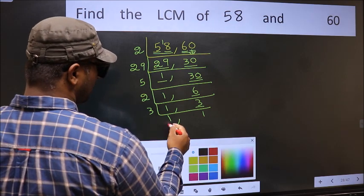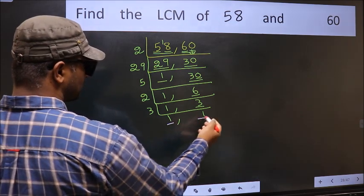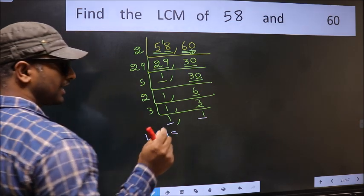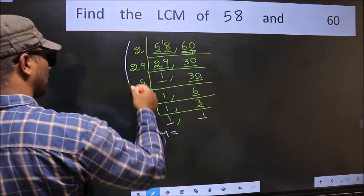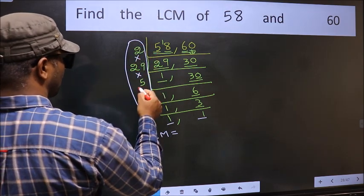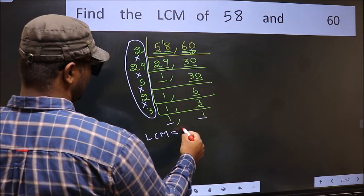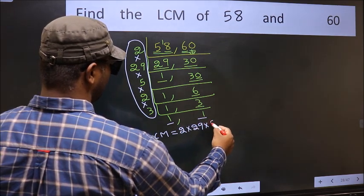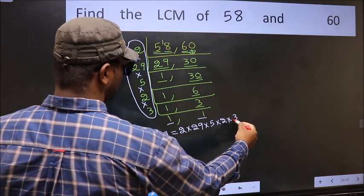So we got 1 in both the places. So our LCM is, LCM is the product of these numbers. That is 2 into 29 into 5 into 5 into 2 into 3.